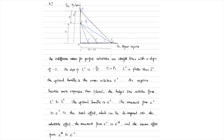For Q1, bio-aspirin, the substitution effect causes the quantity demanded to reduce to zero. There is no income effect, and therefore the total effect is the substitution effect. For Q2, Tylenol, the substitution effect and the income effect move in opposite directions, and the total effect is the sum of them.